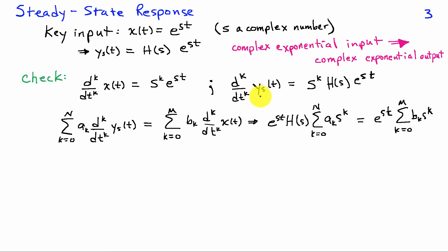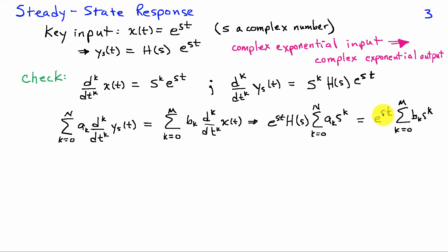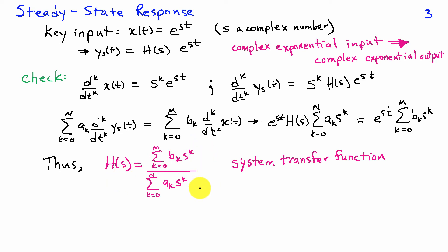Similarly, the k-th derivative of y_s is s^k times e^(st) times the constant H(s). Substituting these derivatives into the differential equation, the left-hand side gives e^(st)·H(s) times the sum from k=0 to N of a_k·s^k, and the right-hand side gives e^(st) times the sum from k=0 to M of b_k·s^k. Canceling e^(st) from both sides, we see that this input-output pair satisfies the differential equation, and H(s) must be the ratio of these two polynomials in s. This ratio is called the system transfer function.